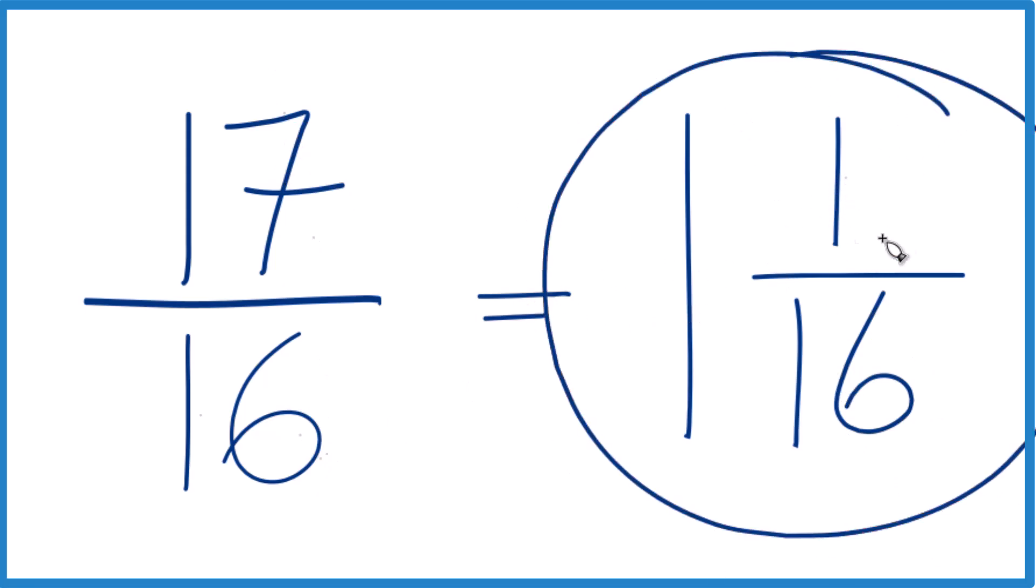This is our mixed number. We can check that too. 1 times 16, that's 16. 16 plus 1, that's 17. And then you keep the 16, the same here across.